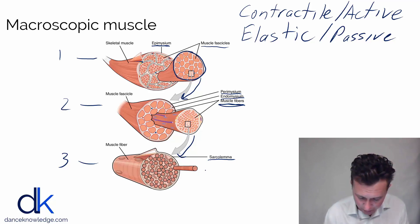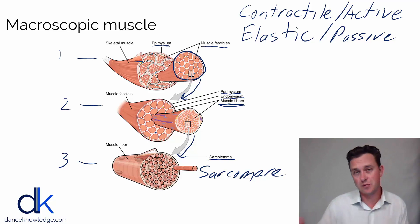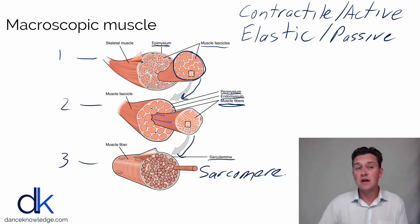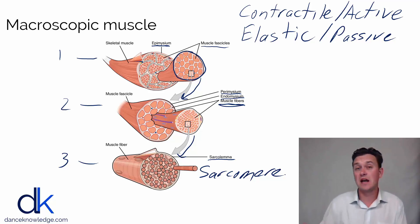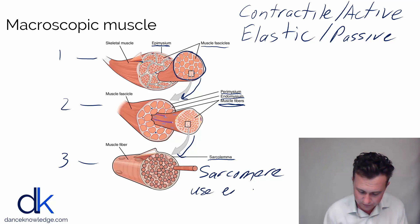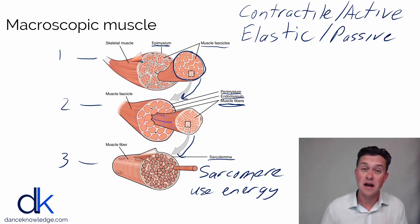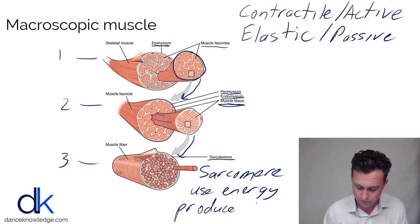Here we have an example of sarcomeres — lots of sarcomeres. A sarcomere is the fundamental unit of a muscle. Every muscle is comprised of thousands upon thousands of sarcomeres. Sarcomeres are the element of the muscle that use energy and, as a result, produce force.